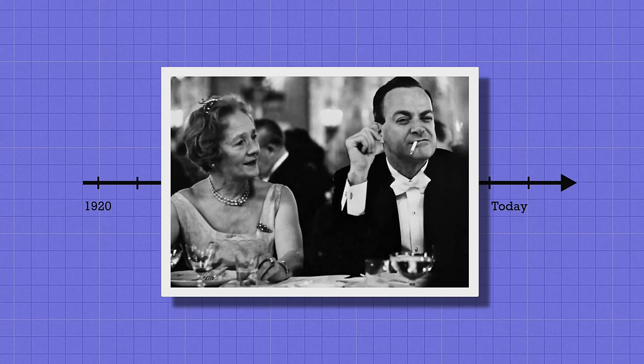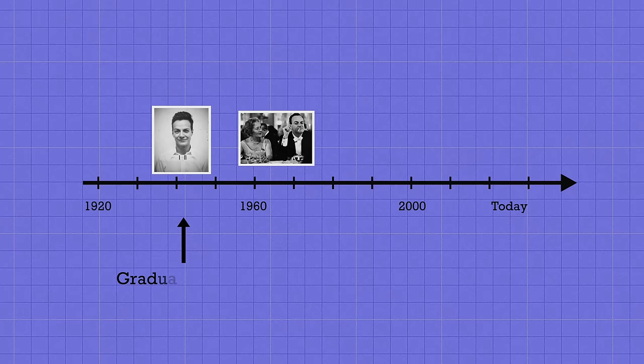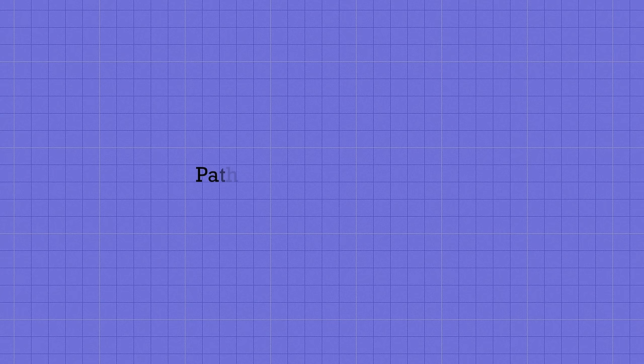But long before he was a famous Nobel Prize winner, as a matter of fact when he was just a 20-something year old grad student, Feynman's first great discovery was an entirely new way of thinking about quantum mechanics, which in the 80 years since has proven essential to our modern understanding of quantum physics.